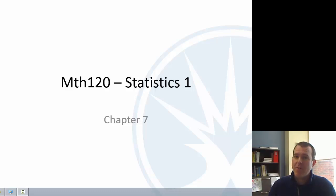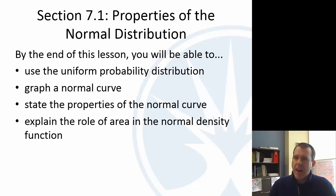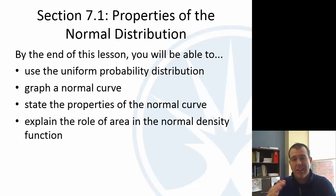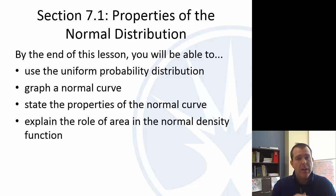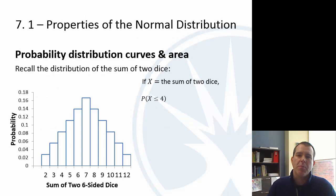Welcome to the next chapter for Statistics Math 120 at ECC. This chapter covers the normal distribution, starting with what it is, its properties, what its graph looks like, and how we interpret area. One key difference now is we're moving beyond random variables that take on single countable values. When variables can take on a continuous range — like measuring height or weight — we can't ask for the probability of an exact value, but we can ask for the probability of a range.